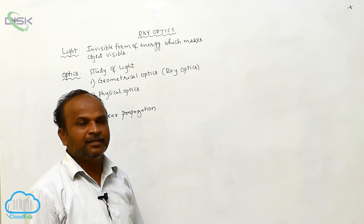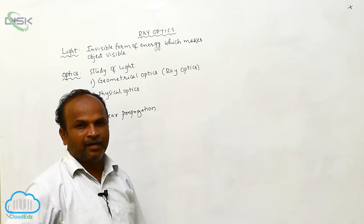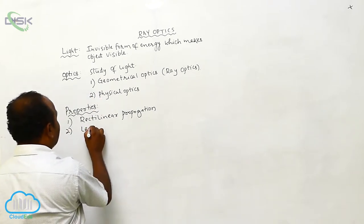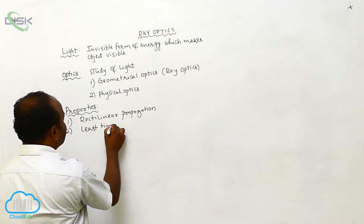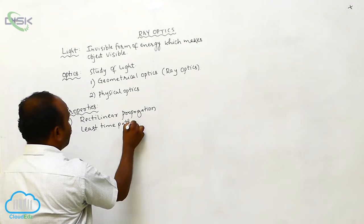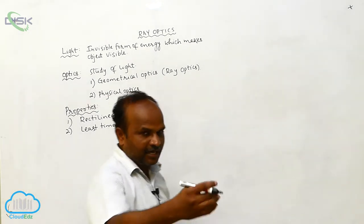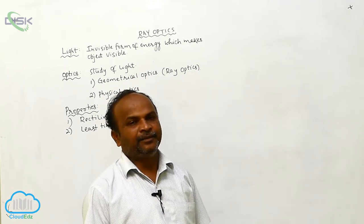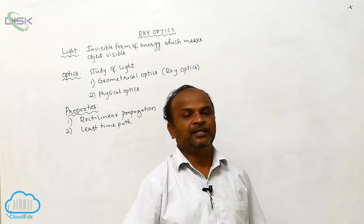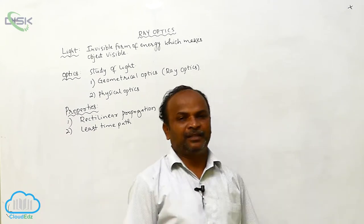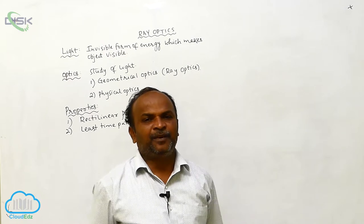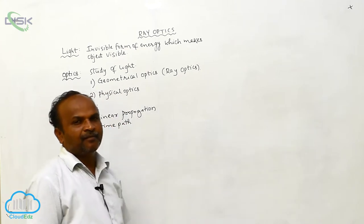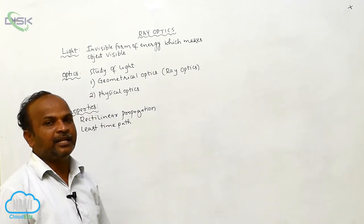That means it follows Fermat's principle. According to Fermat's principle, light selects the least time path — whenever light travels from one point to another point, out of all possible paths, it selects the least time-taking path.